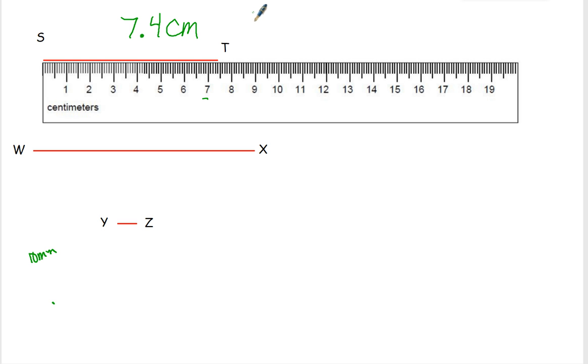Or, before we would say this was seven centimeters plus four millimeters. But now we can just write it as a decimal, seven point four. Or seven and four tenths.